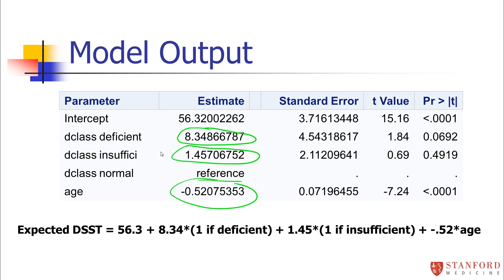Interestingly, these are made up data. And so, in the process of making up the data, I built in something a little funny, which is that the deficient group, after you adjust for age, actually looks like it has a higher cognitive score than the normal group.